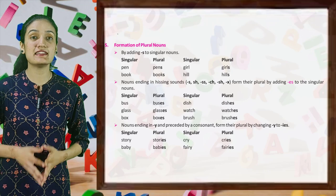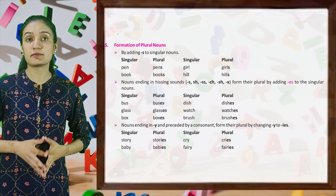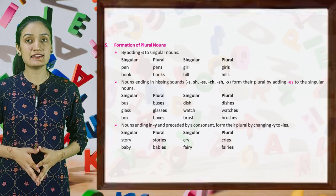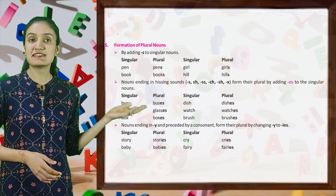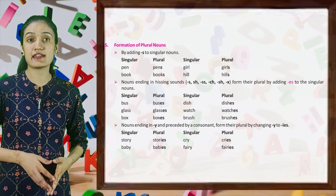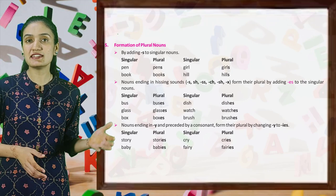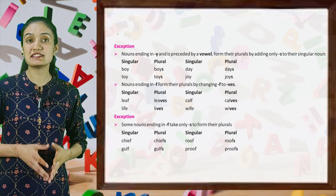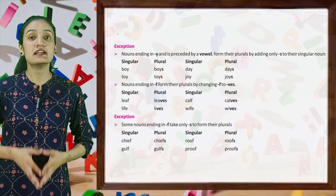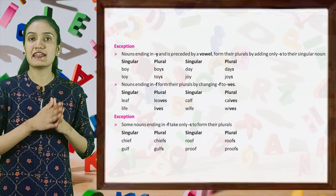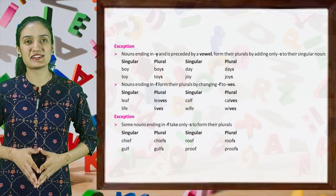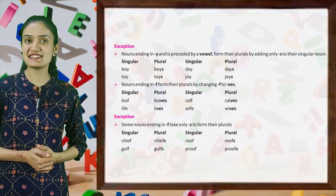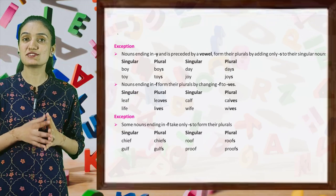Nouns ending in Y and preceded by a consonant form their plural by changing Y to IES. Examples: story → stories, cry → cries, baby → babies, fairy → fairies. But here are some exceptions — nouns ending in Y preceded by a vowel form their plural by adding only S: boy → boys, day → days, toy → toys, joy → joys.